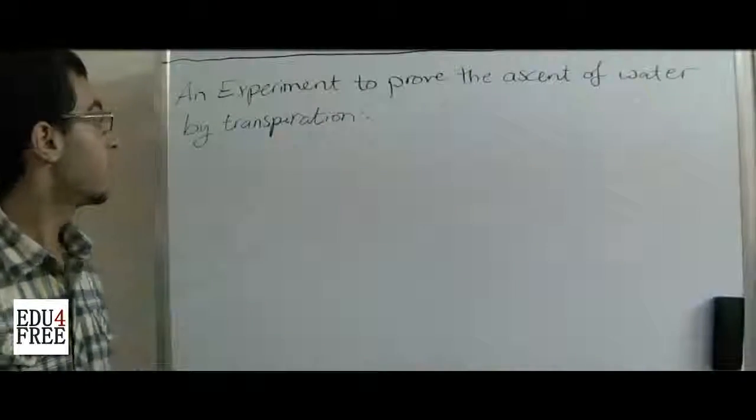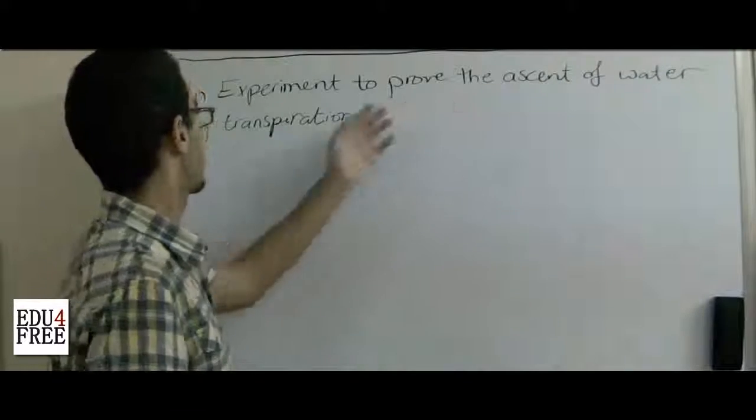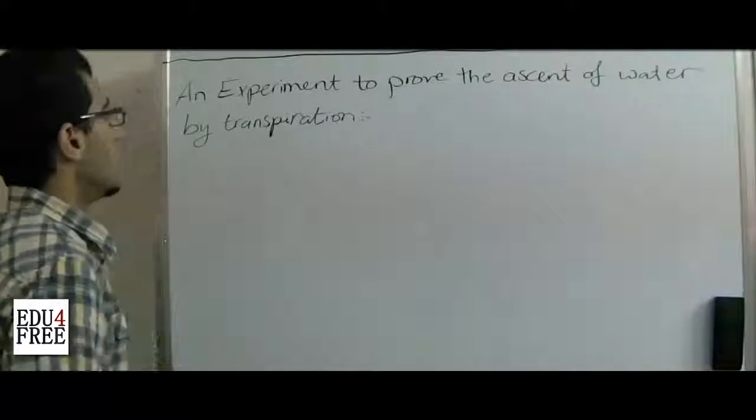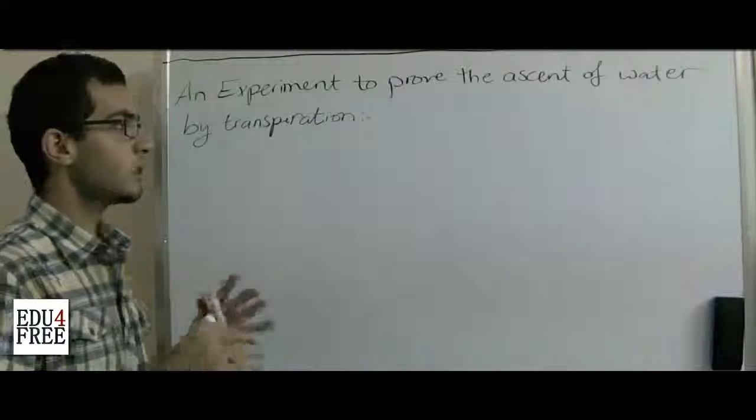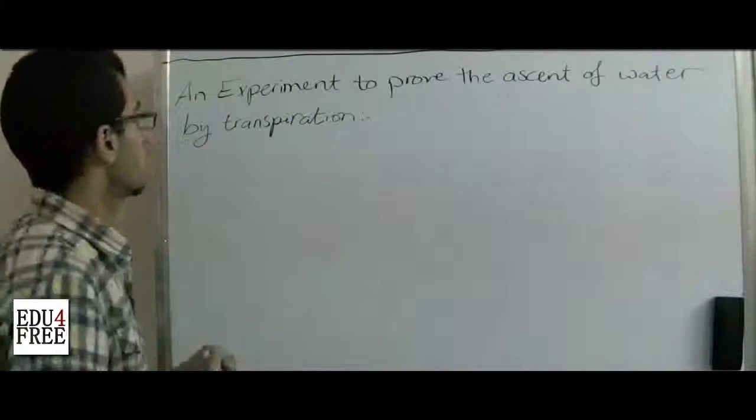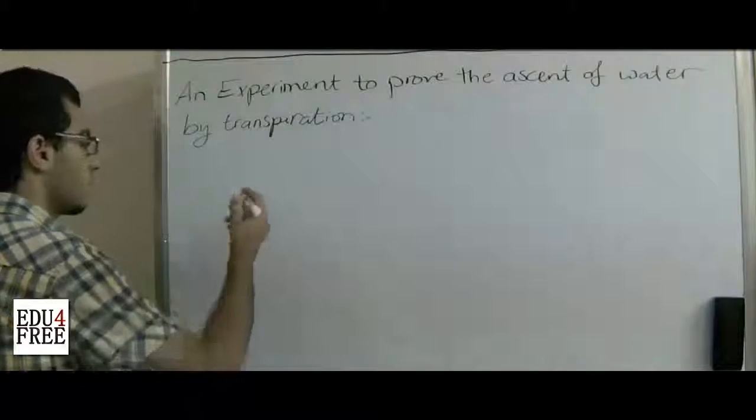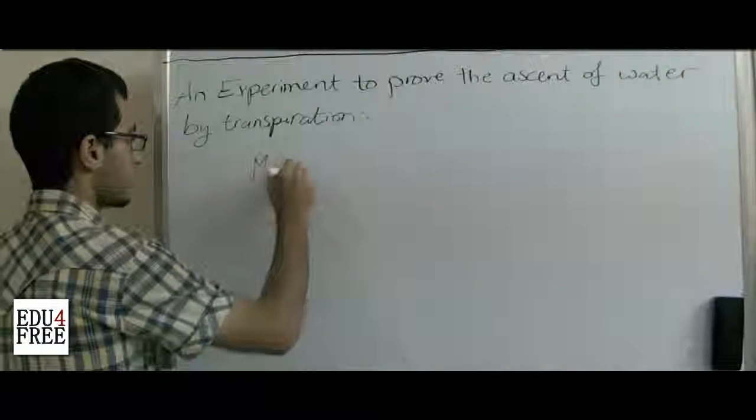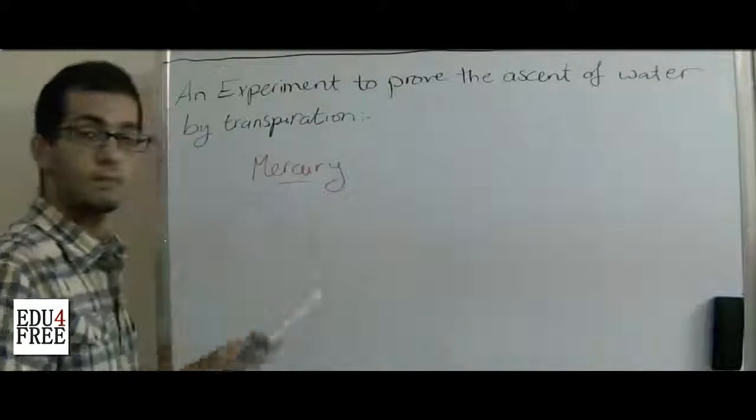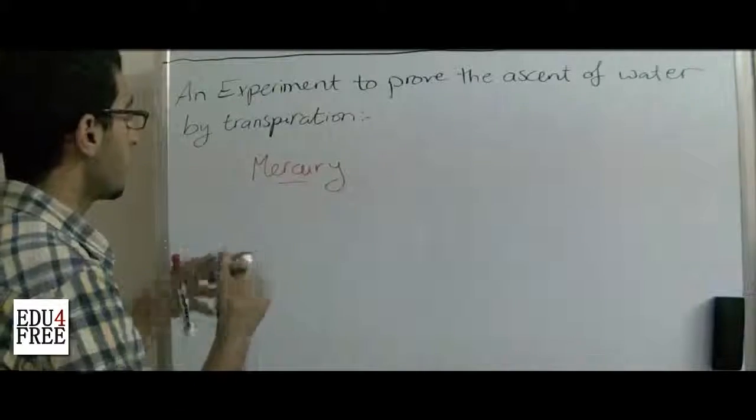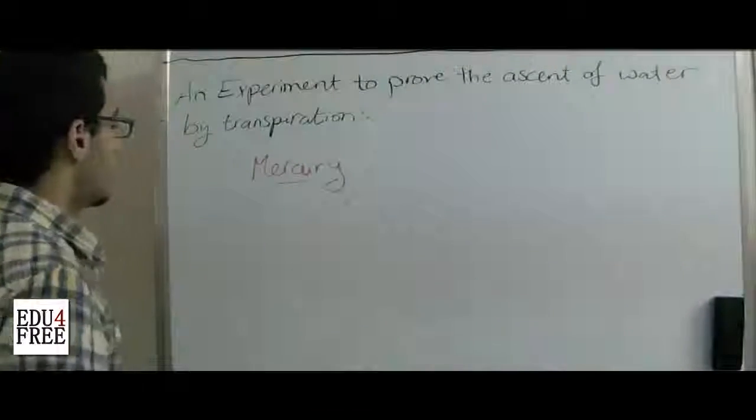Hello everybody and welcome back. Today we are having an experiment to prove the ascent of water by transpiration. The point of this experiment is proving the ascent of water by using mercury to indicate the rise of the mercury level, which will prove that water ascends by the power of transpiration.